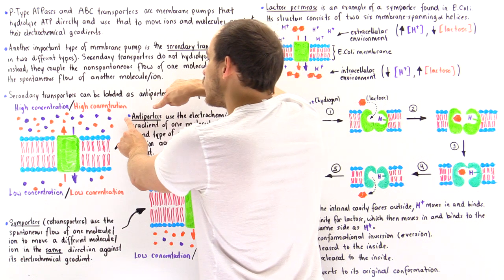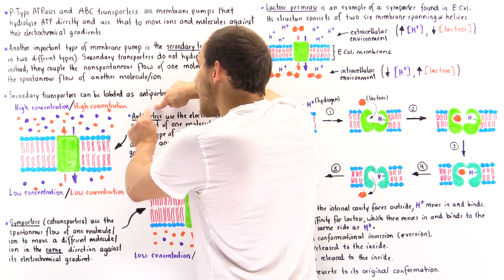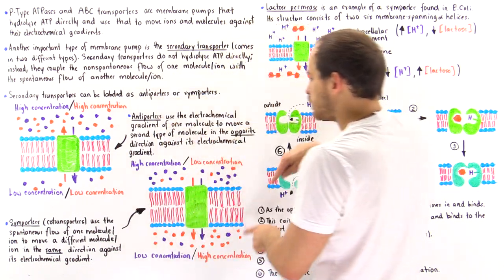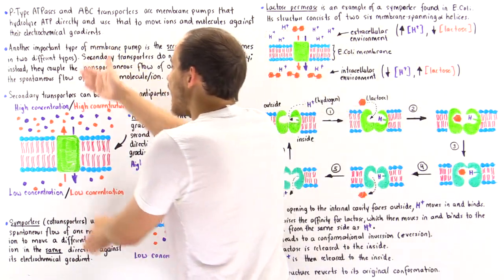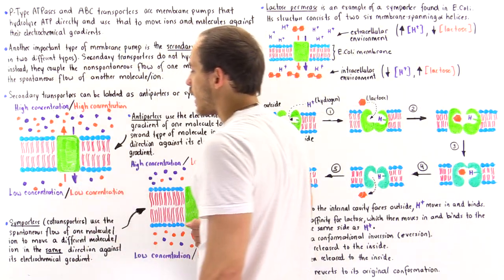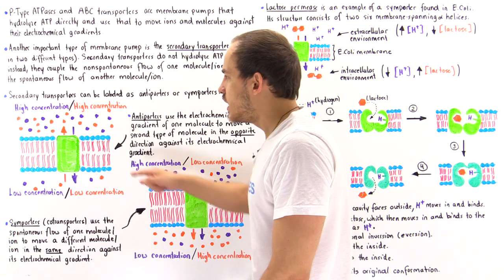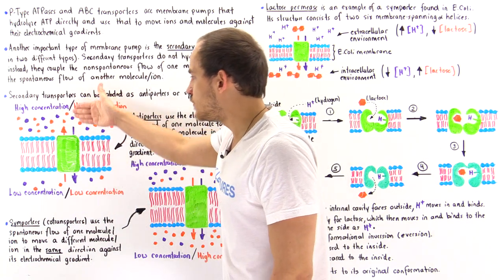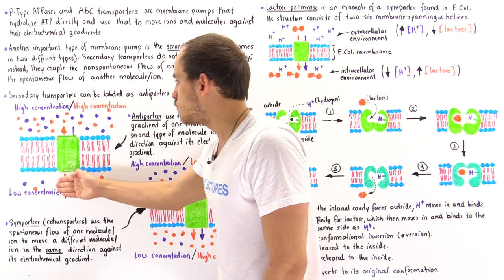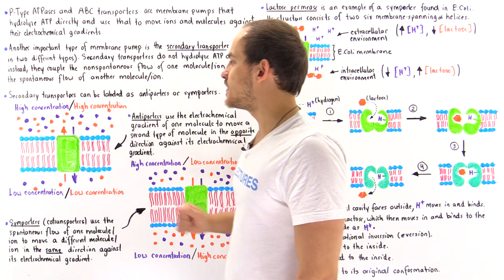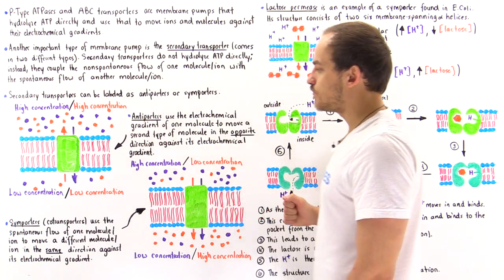We call them antiporters because they move in opposite directions — the purple molecules move in one direction, and the orange molecules move in the opposite direction.